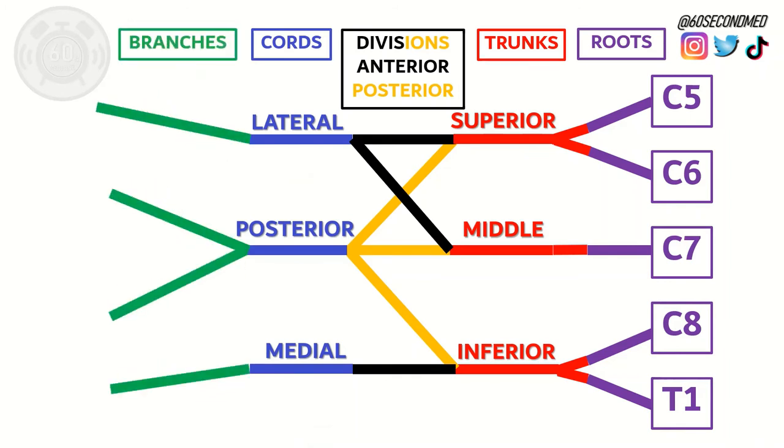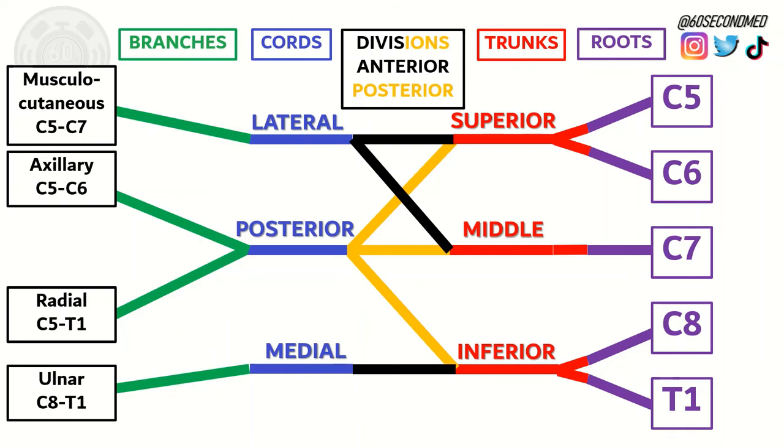After that we can come to the main nerve branches of the brachial plexus. Shown here are the musculocutaneous, axillary, radial, and ulnar nerves. Finally, to complete this drawing of the brachial plexus, we can add in the median nerve coming from the lateral and medial cords.